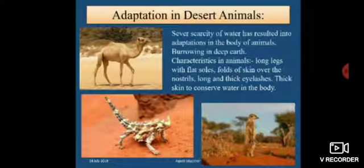Adaptation in desert animals. Scarcity of water - meaning less amount of water is present - has resulted in adaptations in the body of animals. These include burrowing deep into the earth, long legs with flat soles, folds of skin over the nostrils, long and thick eyelashes, and thick skin to conserve water in the body.